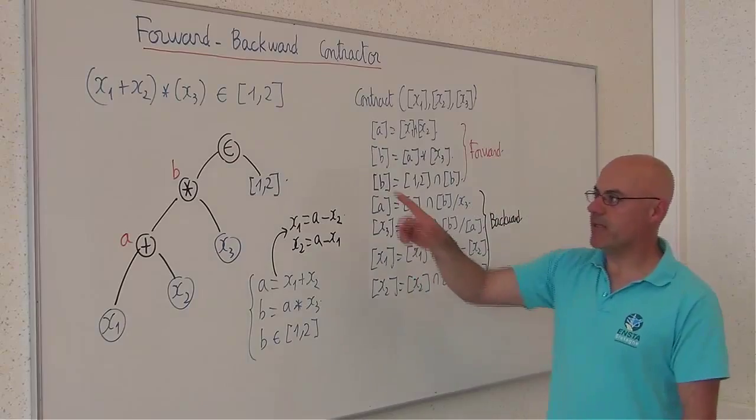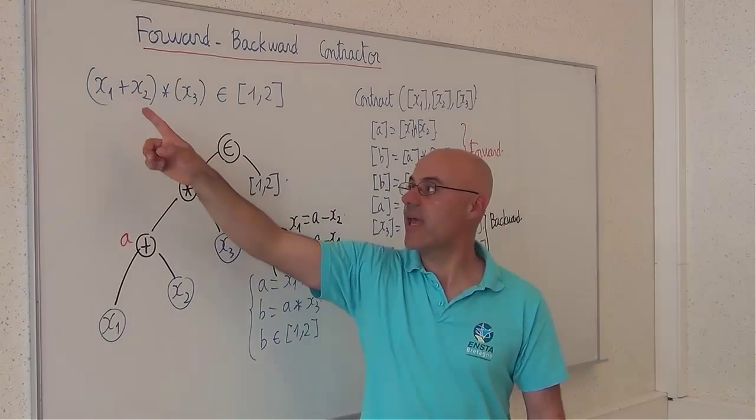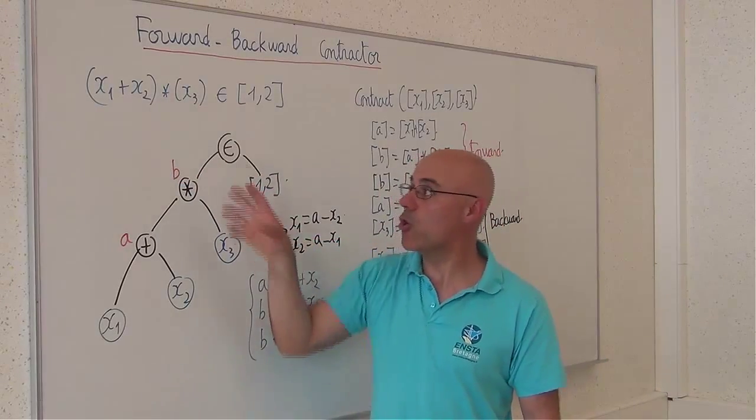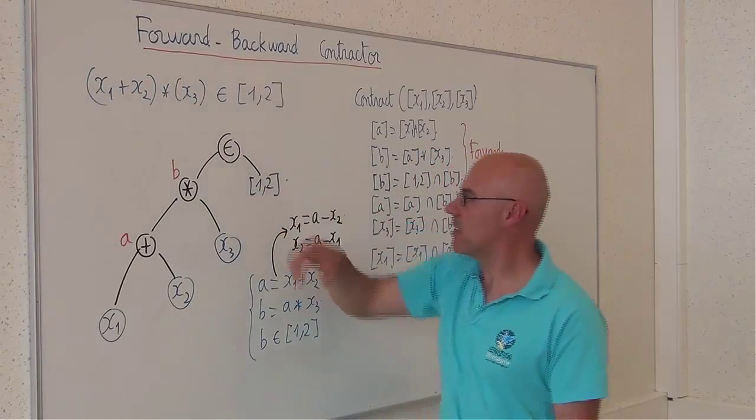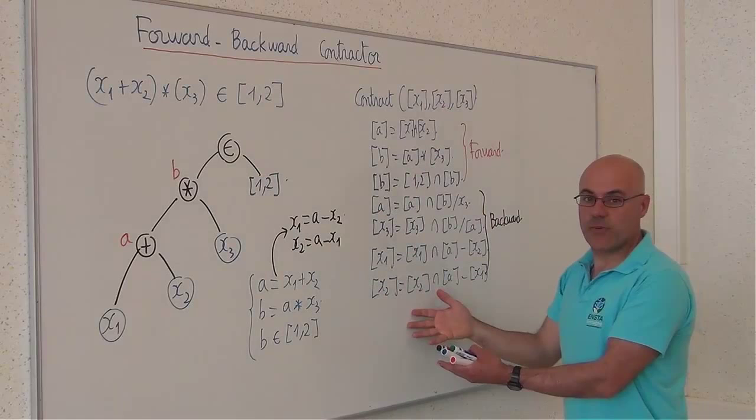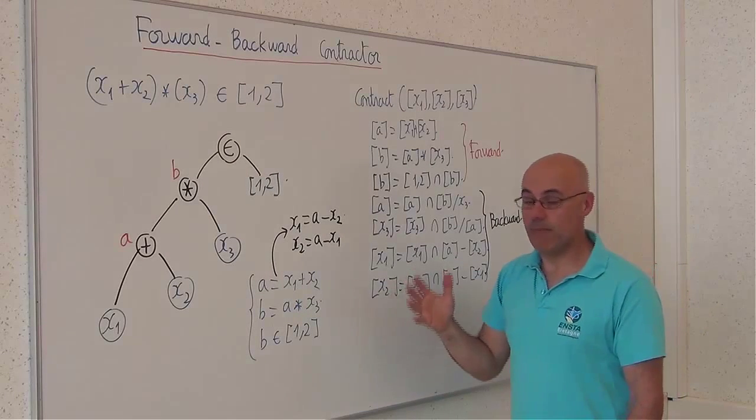In our particular constraint, since x1, x2, x3 occur only once in the expression of the constraint, the corresponding contraction will be minimal.